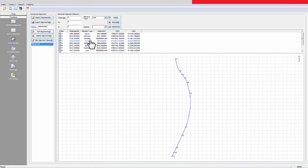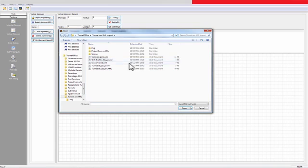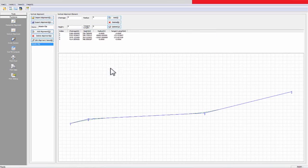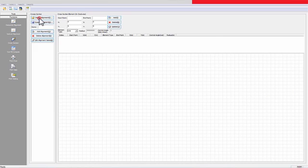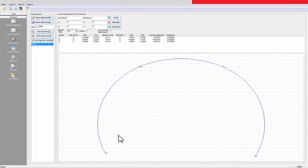For the vertical part of the alignment, it is similar. Import the vertical alignment XML file and check the graphical view and the details of the vertical elements. Finally, access cross sections for the tunnel profiles. Import the XML file containing the profiles and check the profile details graphically or by element.